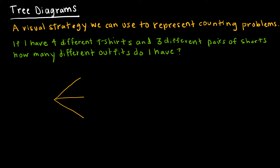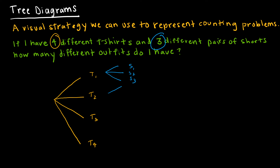I'm going to make four branches because I have four different t-shirts. I'll call them t-shirt one, t-shirt two, t-shirt three, and t-shirt four. And then off of each of those, I'm going to make three branches because there are three options for the next item. Here I would write shorts one, shorts two, shorts three — and I would do that for each branch.